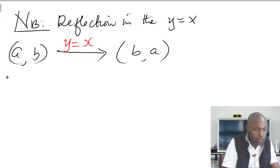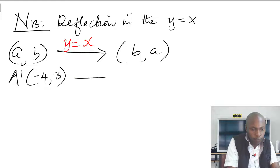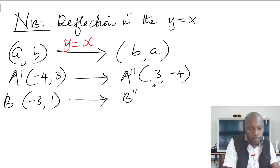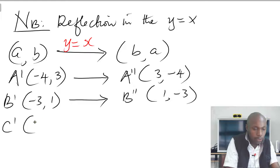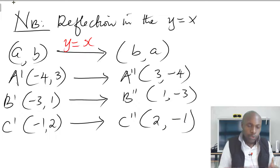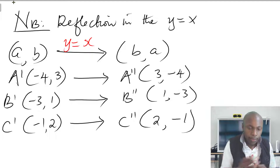So in this case: A prime is (−4, 3), so A double prime will be (3, −4). B prime is (−3, 1), so B double prime will be (1, −3). C prime is (−1, 2), so C double prime will be (2, −1). That is how you reflect — reflection in y equals x simply reverses or interchanges the x and y coordinates.